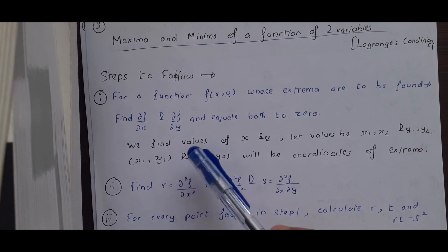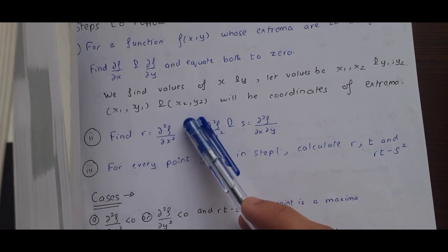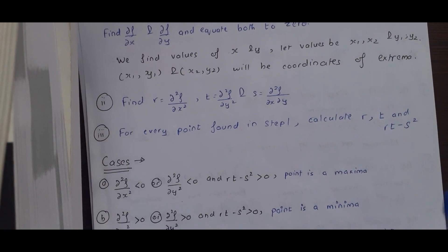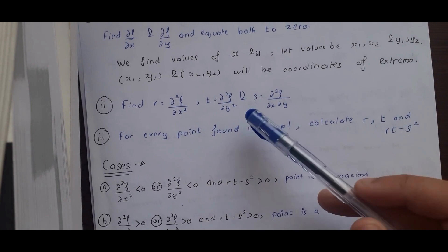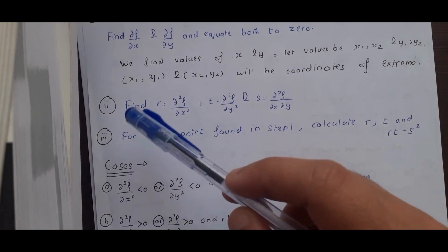We'll find some values x1, x2 and y1, y2. We can take these as coordinates: (x1, y1), (x2, y2), which are the coordinates of the extrema. Then we find the second derivative with respect to x, second derivative with respect to y, and second derivative with respect to x and y. I'll call these r, t, and s for convenience.